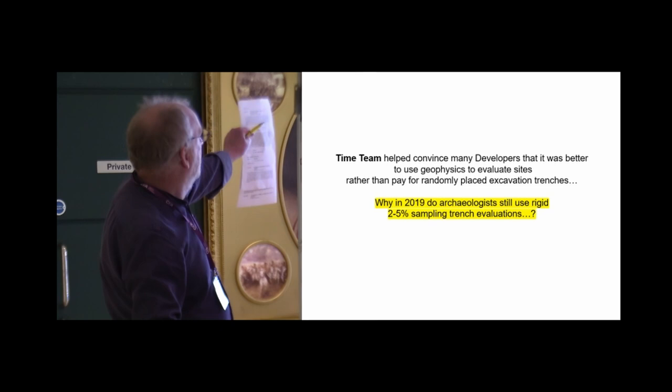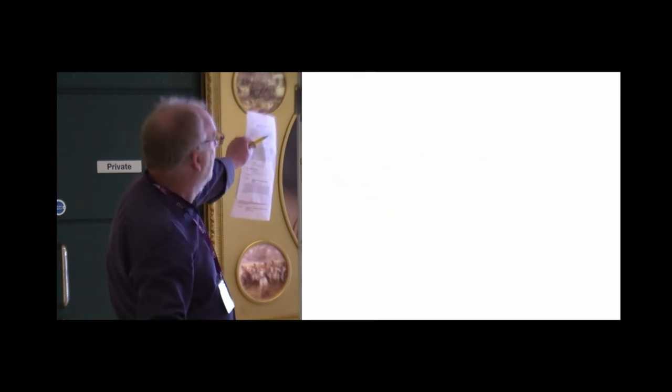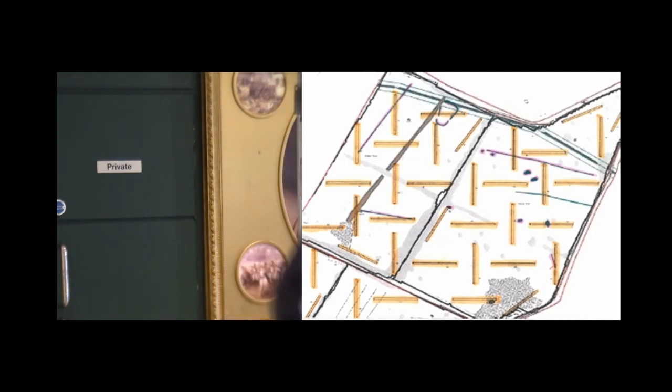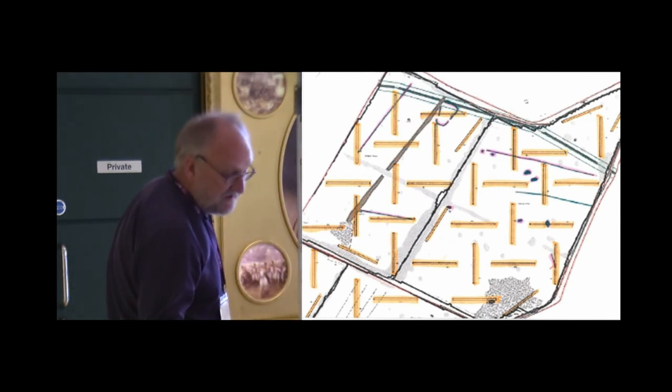Why did we do 2 to 5% rigid sampling schemes? Here's a plot showing archaeology in pink, nice, very large pit clusters. We still put in trenches, disregarding where the archaeology is. What's the point? And that's not the geophysicist at fault.